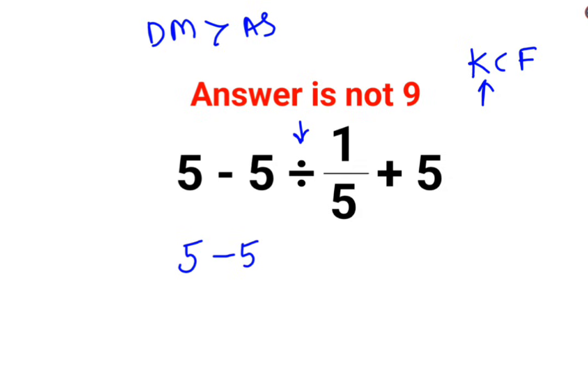K keeps means the first number has to be kept as it is. C stands for changing the division sign to multiplication. F stands for flipping or taking reciprocal of one upon five, which is five, plus five.